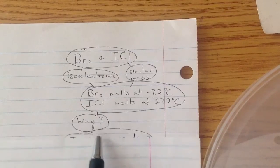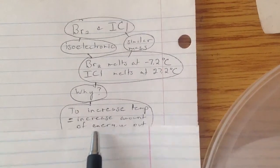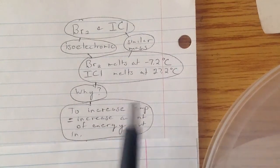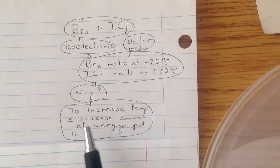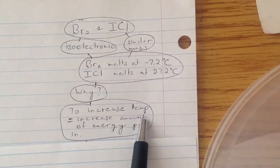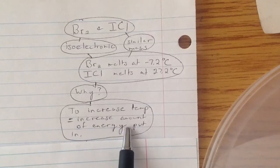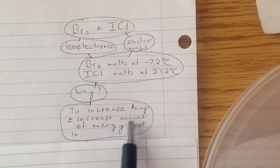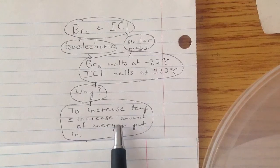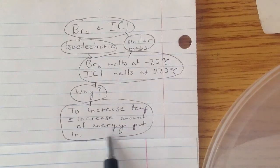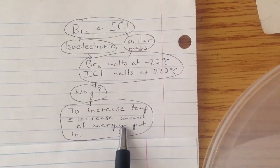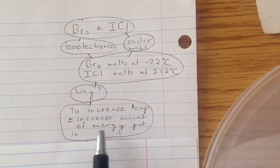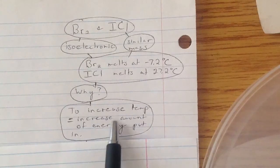To explain that, you first have to understand what increasing temperature means. When you increase temperature, what you're really doing is adding energy. You're adding energy so the molecules can move faster. Because temperature, all temperature is, is a measurement of how fast molecules are moving. So if you want to make those molecules move faster, you have to put in energy.